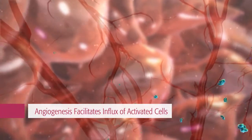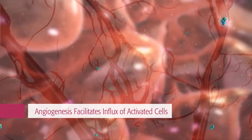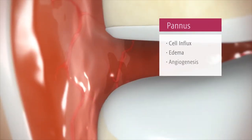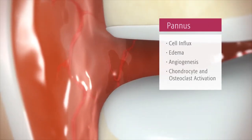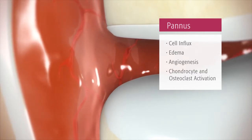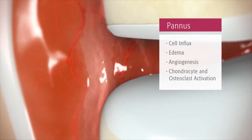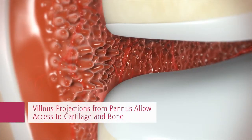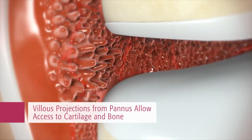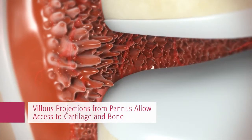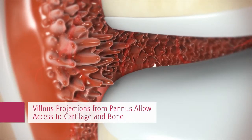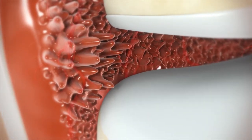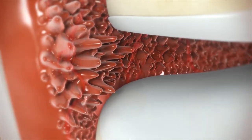Angiogenesis facilitates an influx of activated cells. These cells contribute to the growth of pannus and sustain the inflammatory cycle. The growing vascularized pannus develops villus projections that result in better access to the cartilage and bone, and therefore greater opportunity for the activated cells to release damaging inflammatory mediators and enzymes.